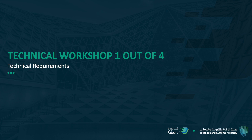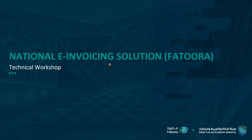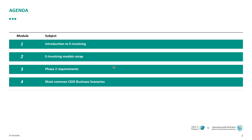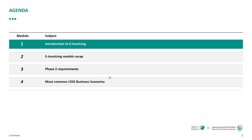Assalamu alaikum everyone and welcome to ZATCA's technical workshop for the national e-invoicing solution. This is going to be a series of workshops where we'll go into details about the phase two requirements of e-invoicing. In this specific workshop, we're going to have a quick introduction to e-invoicing, look at the two different e-invoicing modules, recap the phase two requirements, and finally look at the most common CSID or cryptographic stamp ID business scenarios.